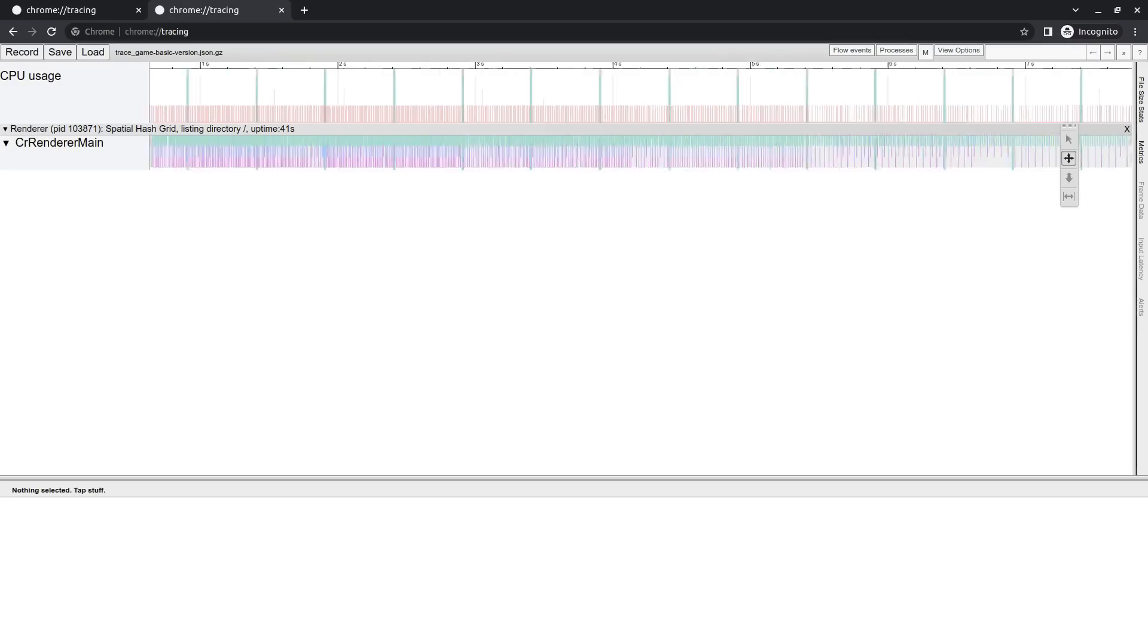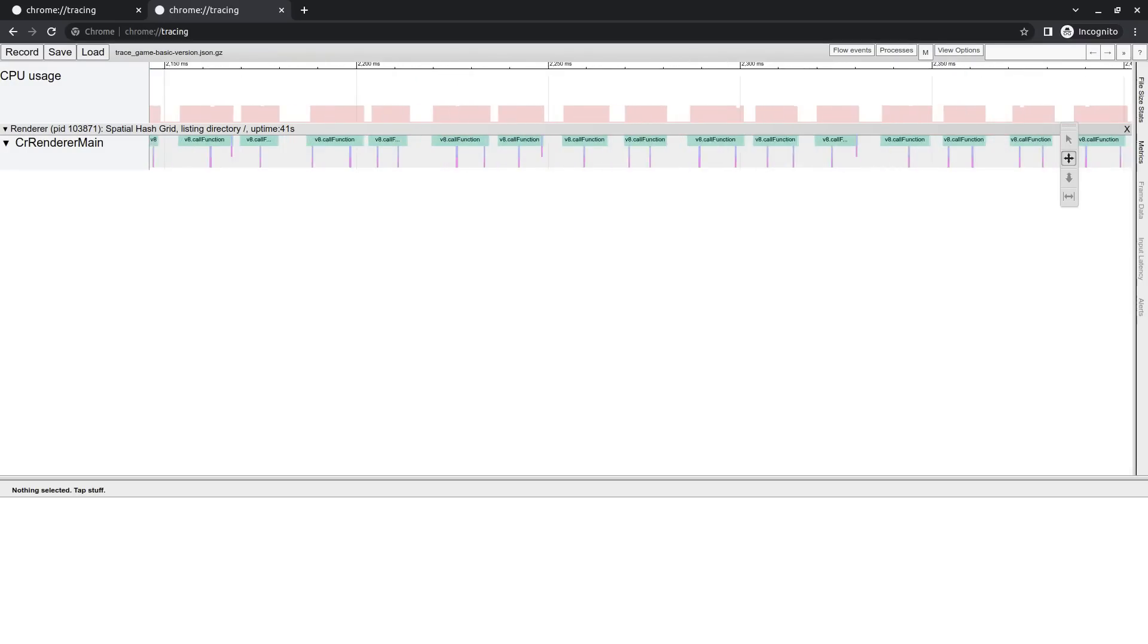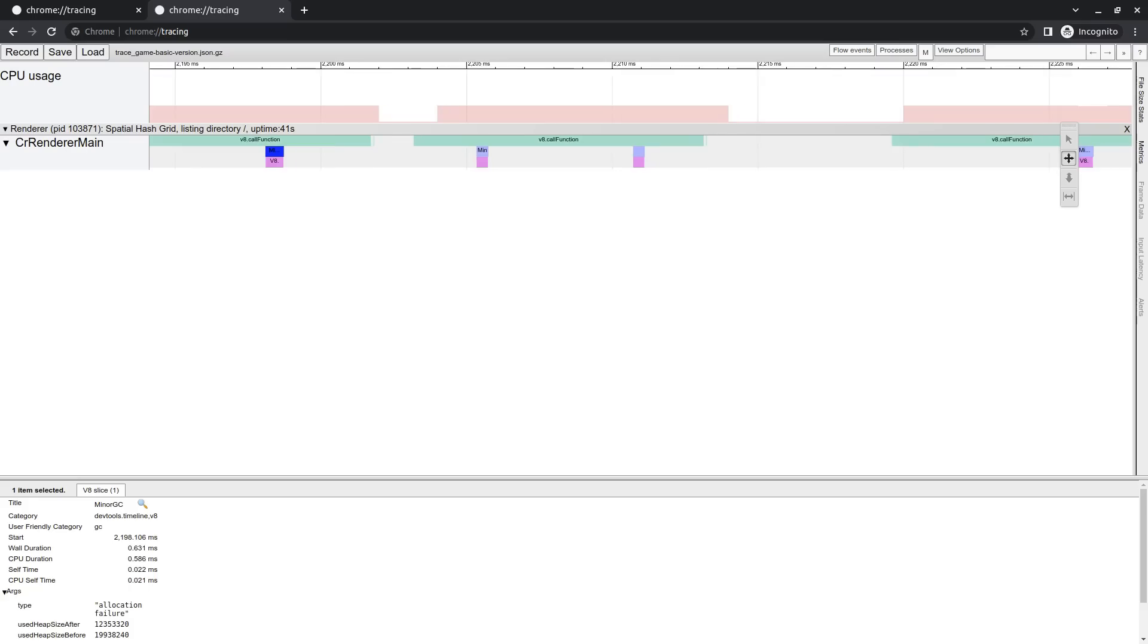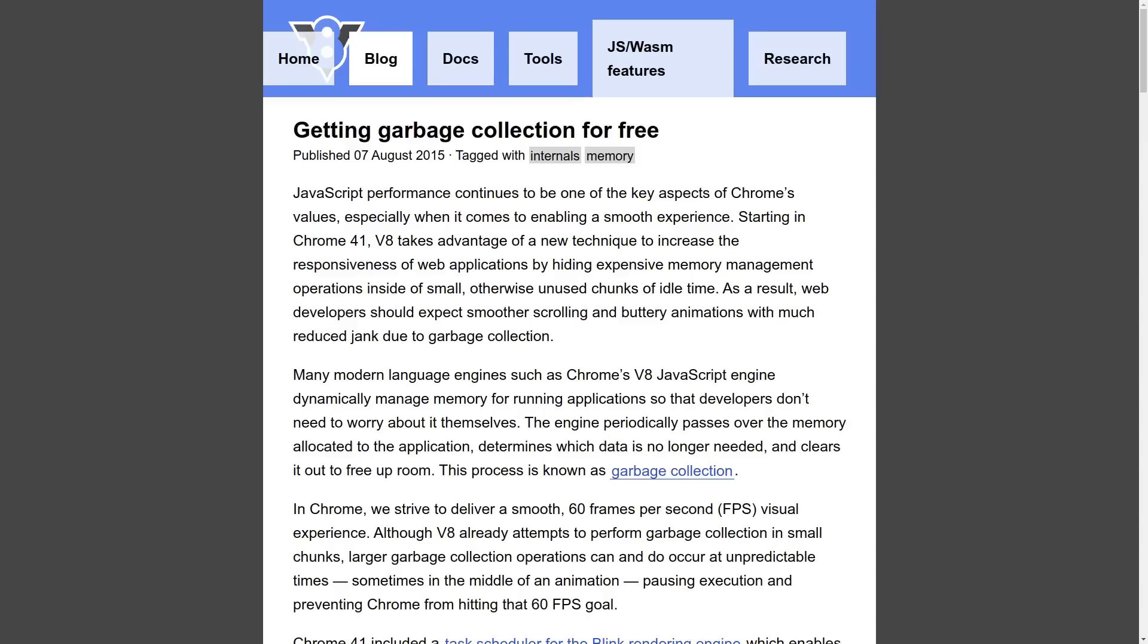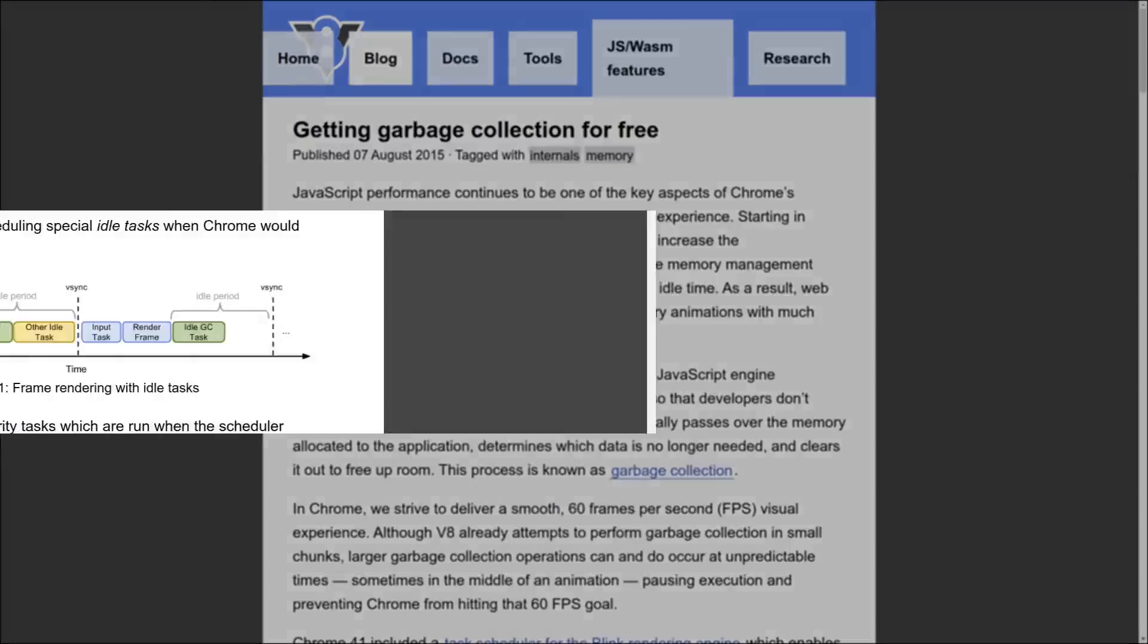One really interesting thing that stands out here is that in the first example, let's zoom in and look at these minor GC calls. They're happening during the frame, sometimes multiple times, meaning that they're contributing to longer frames. In the second example they're happening in the idle time between frames, which is totally by design. V8 specifically built this feature into Chrome. When it detects there's an idle period, that's where V8 has the go-ahead to quickly run GC.